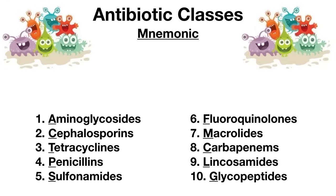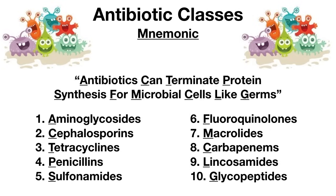It can be tough to remember all these different classes of antibiotics, so I came up with a simple mnemonic to help: 'Antibiotics can terminate protein synthesis for microbial cells like germs.' This mnemonic is great because it not only helps you remember the 10 main classes, but it also helps you remember how some of these antibiotic classes work — specifically that some inhibit protein synthesis in bacteria, which prevents the bacterial cells from surviving.